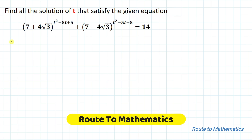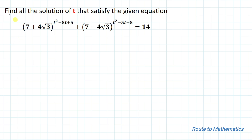Hello everyone, welcome to Root 2 Mathematics. In this video we are going to solve an interesting exponential question. The given question is: find all solutions of t that satisfy the equation (7 + 4√3)^(t²-5t+5) + (7 - 4√3)^(t²-5t+5) = 14. We have an exponential equation where the exponent is itself a quadratic. Without any delay, let's start the solution.